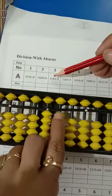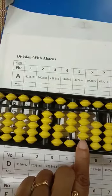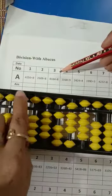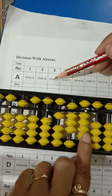Question number 4. 4184 divided by 4. 8 times 5 is 40. 8 times 5, minus 40. We have 184.